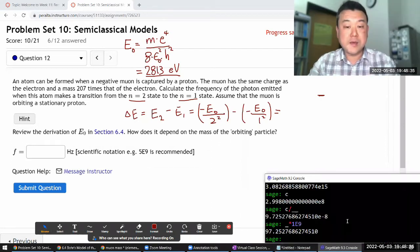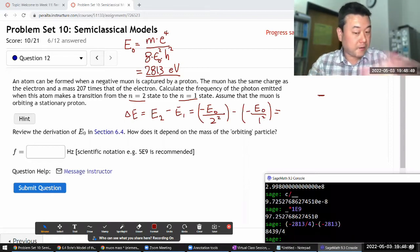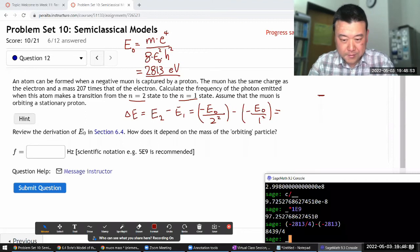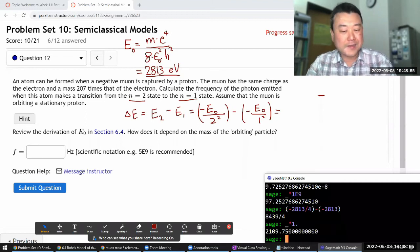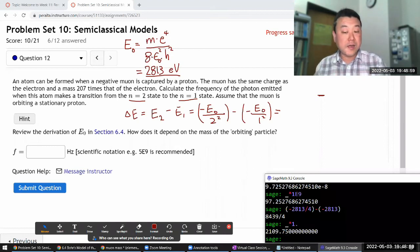I have minus 2813 electron volts divided by 2 squared, or 4, minus minus 2813 divided by 1 squared. And I get a positive quantity. Let me just multiply this with a decimal so that it does the decimal approximation. 2109.75 electron volts. So that's the energy.